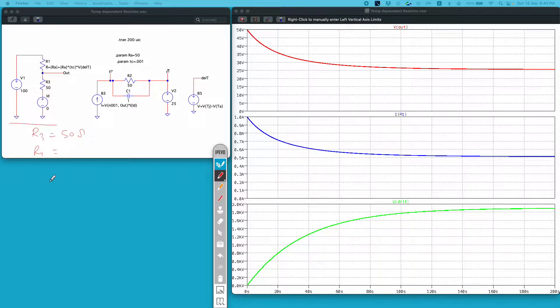For a positive temperature coefficient, we know that resistor value will increase with the rising temperature and relationship between temperature and resistor is given by this classical formula. Rf is equal to R naught times 1 plus alpha delta T.